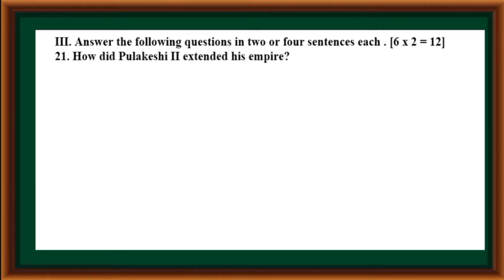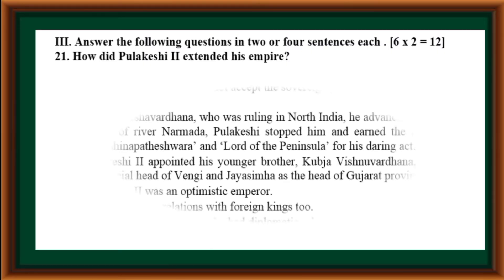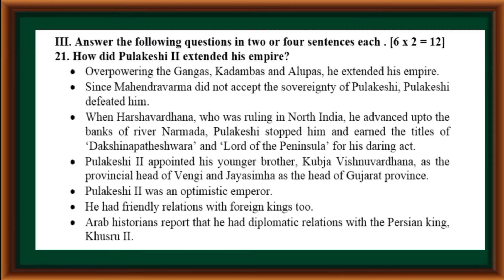Third main: Answer the following questions in two or four sentences each. Six questions, each carrying two marks, total twelve marks. How did Pulakeshi II extend his empire? By overpowering the Gangas, Kadambas and Alupas, he extended his empire. Since Mahindra Verma did not accept his sovereignty, Pulakeshi II defeated him. When Harshavardana, who was ruling North India, advanced up to the banks of the River Narmada, Pulakeshi stopped him and earned the titles of Dakshinapateshwara and Lord of the Peninsula.